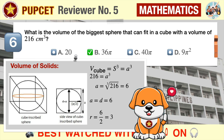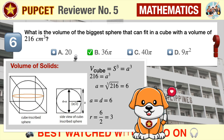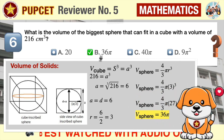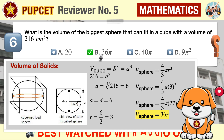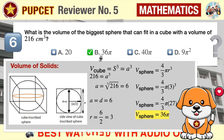Since the edge of the cube equals the diameter of the inscribed sphere, the diameter is 6 centimeters and the radius is 3 centimeters. Using the formula for the volume of a sphere — (4/3)π r cubed — and substituting r = 3, we arrive at 36π as our correct answer.